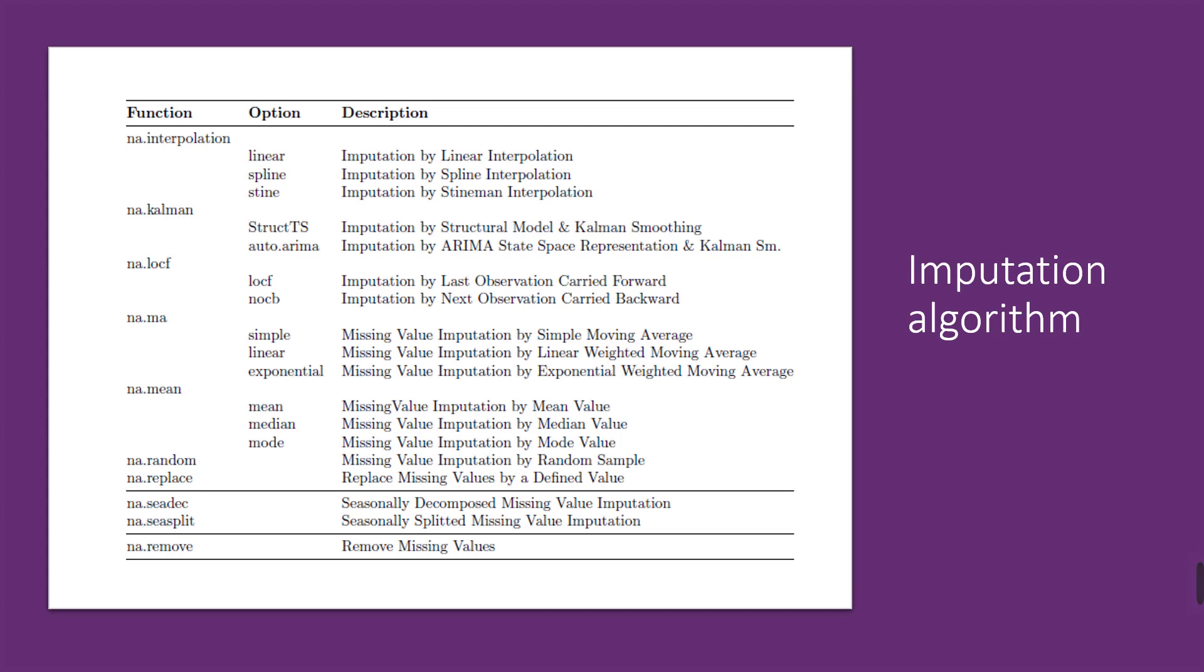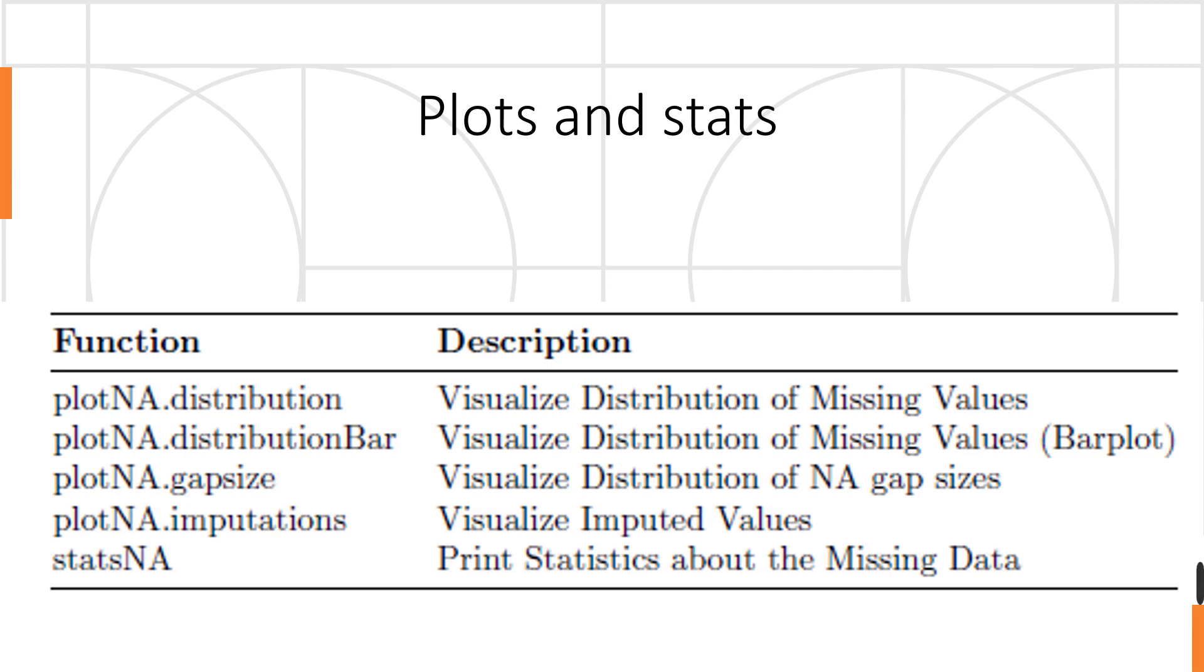I think we can go through any very good time series textbook in order to understand some of these imputation approaches in terms of the theory. Another attribute of imputeTS is that you can actually visualize the distribution of the missing values using line graphs or bar charts. And after imputing the missing values, you can plot to show the points where you have the imputed values, and you can print the statistics about the missing values if you want.